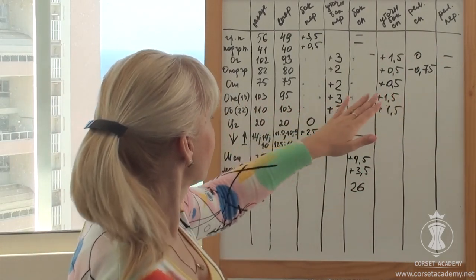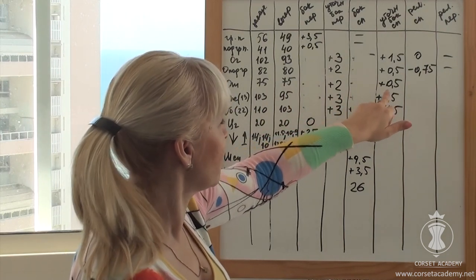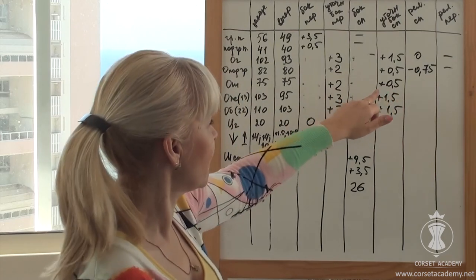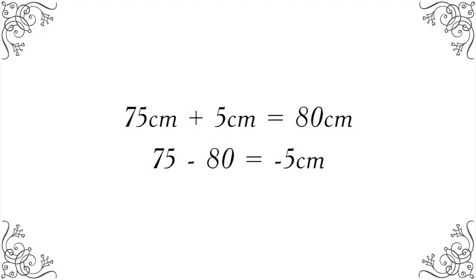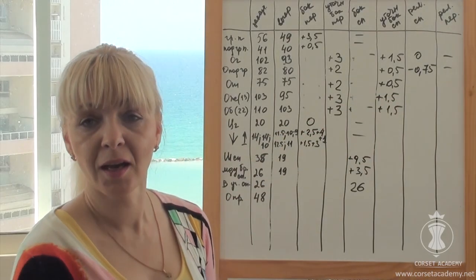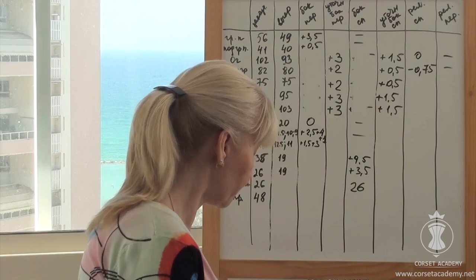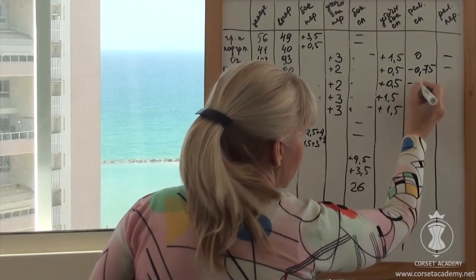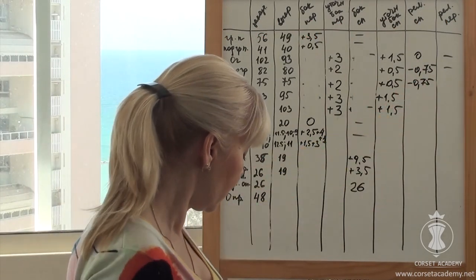Waist circumference. It is 75 cm on the client and 75 cm on the pattern. We have expanded the pattern by 2 cm from each side, 4 cm, and by 0.5 cm from each side, 1 cm, which makes 5 cm total. 75 cm plus 5 cm equals 80 cm. 75 cm minus 80 cm equals negative 5 cm. There are 5 cm that need to be removed from the pattern. Let us do the following. We will use the back princess seams to remove 3 cm in the waist, 0.75 cm from each side. And use the front princess seams to remove the remaining 2 cm, 0.5 cm from each side.